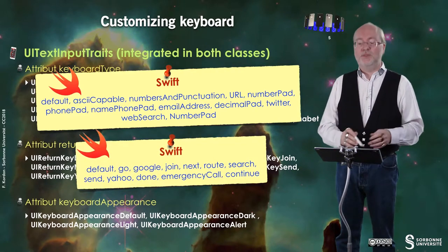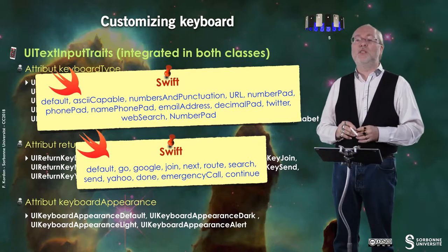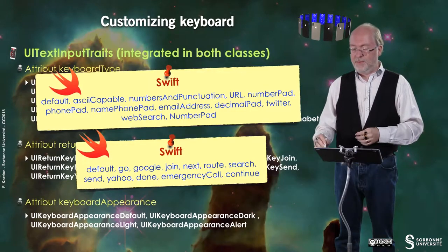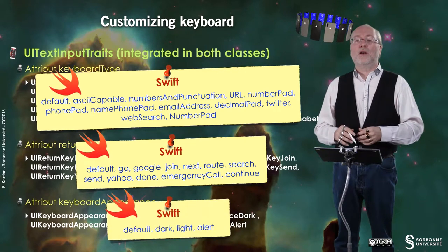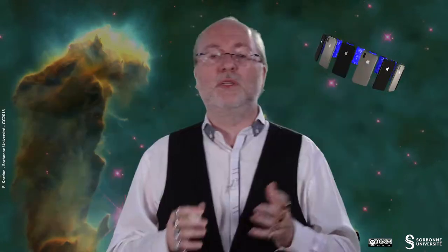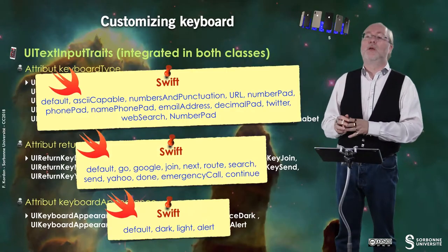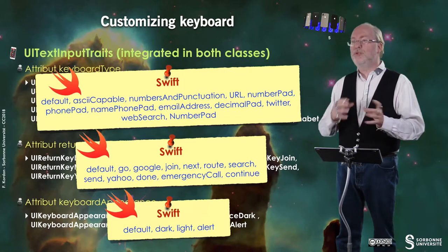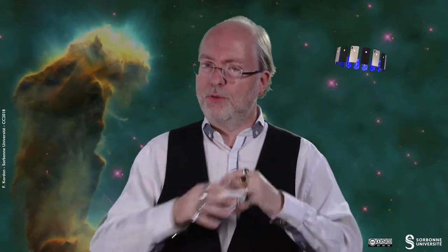These values are in Objective-C, and these are the values in Swift. For example, if you set it to default then it will be 'Return'; if you set it to Google, then you will have a 'Google' key — meaning you are using it in a search context. Finally, you have the keyboard appearance that can be default, dark, light, or alert-like. Just play with these values to see the change of appearance among the various keyboard types.